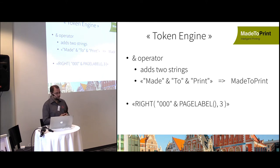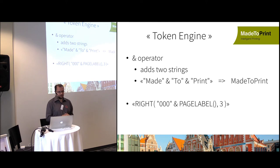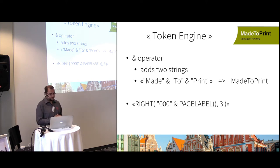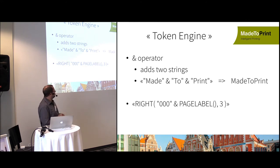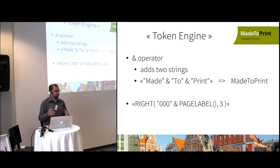One operator you might already use is the AND operator, which concatenates two strings or numbers. For example, a token with strings 'made', 'to', and 'print' will output 'made to print'. Commonly used in combination is the page label function, which returns the label of the currently printed page — and it can be mixed with functions and strings.